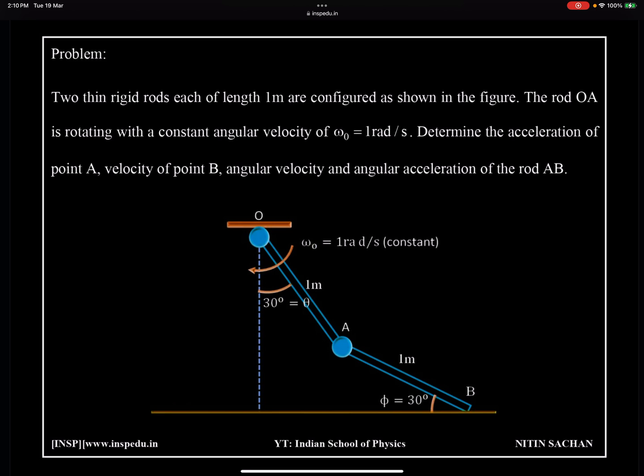As you can see here, two thin rigid rods are there, each of length 1 meter. We can have L1 and L2 length as well here. As shown in the figure, the rod OA is rotating with constant angular velocity of ω₀, which is 1 radian per second.